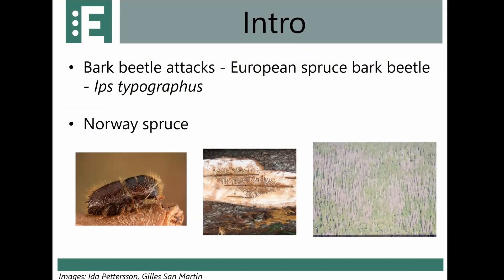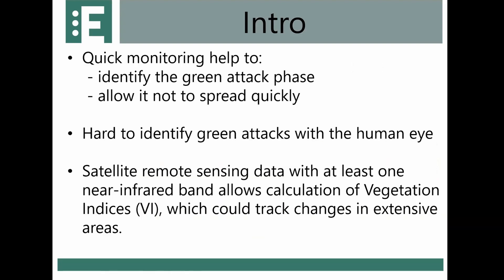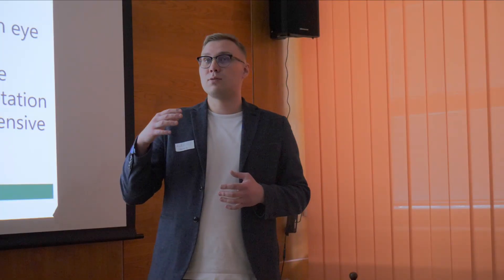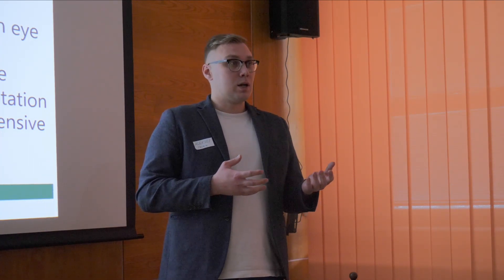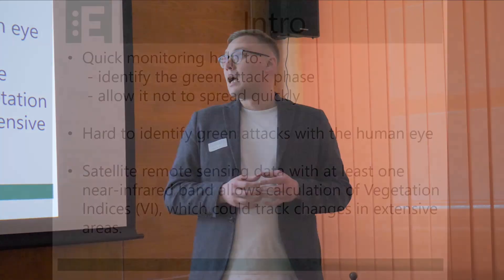The biggest problem in European forests is the bark beetle and its interaction with Norway spruce. These insects make galleries and damage the forest. We need remote sensing to help identify different phases of the bark beetle attack spreading and prevent rapid expansion. The challenge is that we cannot detect the green attack phase with the human eye, but satellite imagery with at least one near-infrared band plus RGB allows us to calculate vegetation indices for monitoring.